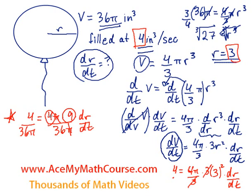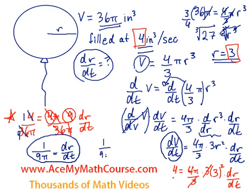So we end up with, now 4 over 36 is just 1 over 9, so dr/dt is equal to 1 over 9π. So that is the rate in which the radius is changing with respect to time, 1 over 9π inches per second. So that's it.